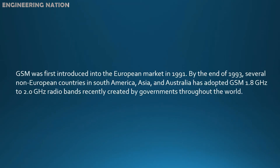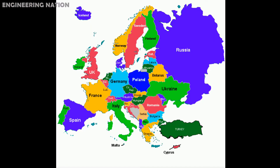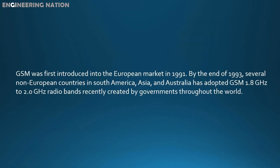GSM was first introduced into the European market in 1991. By the end of 1993, several non-European countries in South America, Asia, and Australia had adopted GSM. The 1.8 GHz to 2.0 GHz radio bands were certainly created by governments throughout the world.